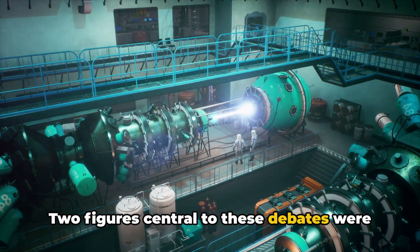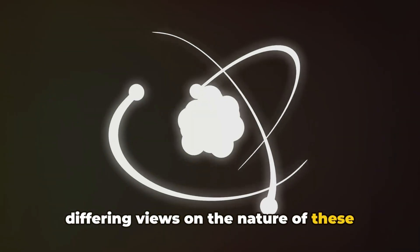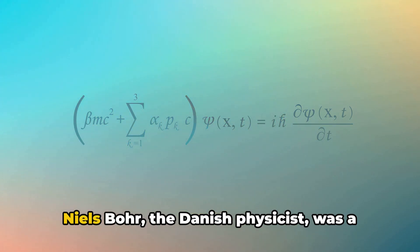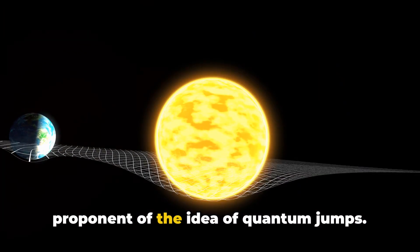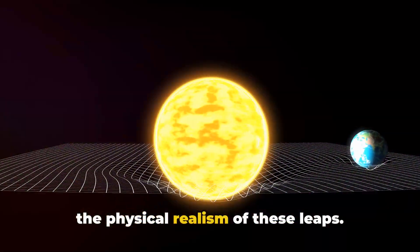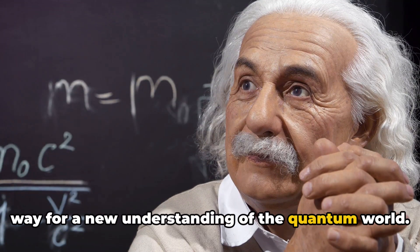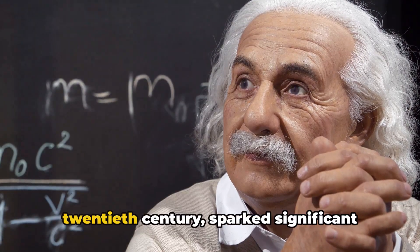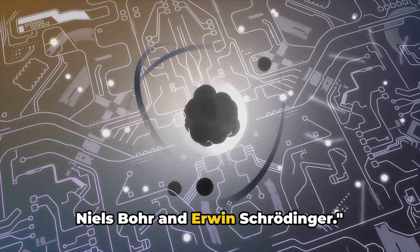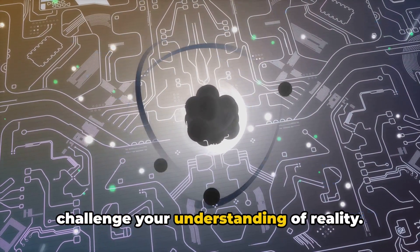Two figures central to these debates were Niels Bohr and Erwin Schrödinger. These two titans of quantum mechanics had differing views on the nature of these quantum jumps, leading to a fascinating discourse that would shape the future of quantum theory. Niels Bohr, the Danish physicist, was a proponent of the idea of quantum jumps. On the other hand, Schrödinger, the Austrian physicist, was skeptical about the physical realism of these leaps. Their debates and discussions paved the way for a new understanding of the quantum world. And so begins our journey into quantum jumping, a journey that promises to challenge your understanding of reality.